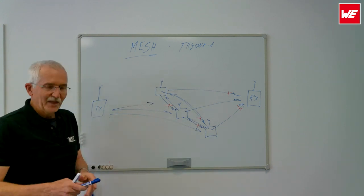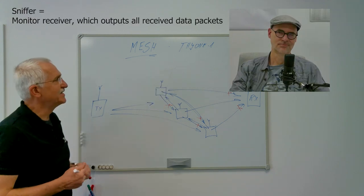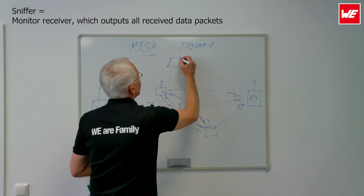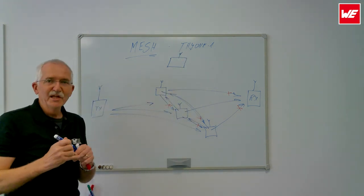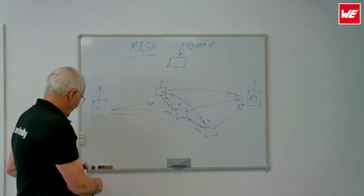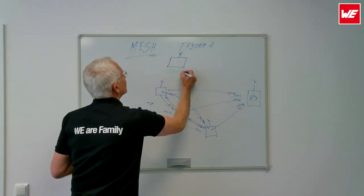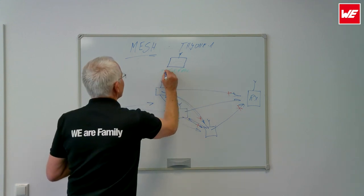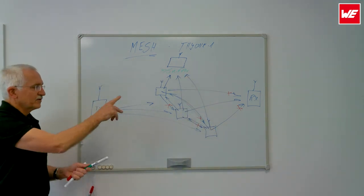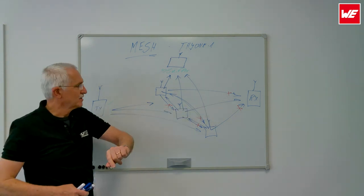I'd like to test this and actually put up a sniffer somewhere. What I'm going to do is put up a nice little sniffer. The sniffer accepts and shows all received packages — all valid packages. So what would happen here is the sniffer would actually receive this package. For three repeaters I could theoretically receive four packages, and one valid package on the RX.